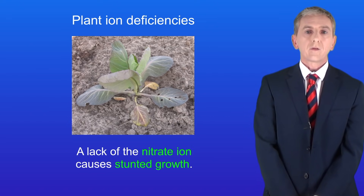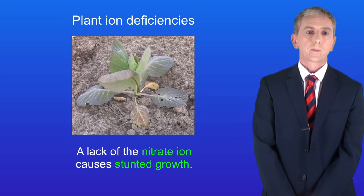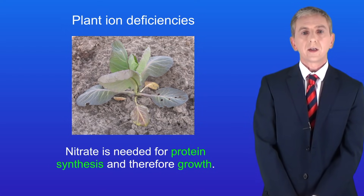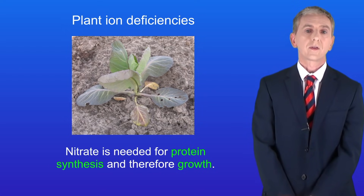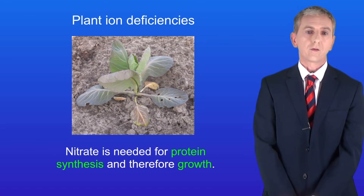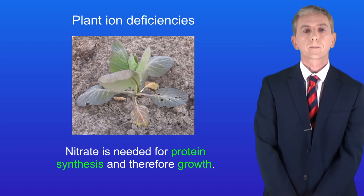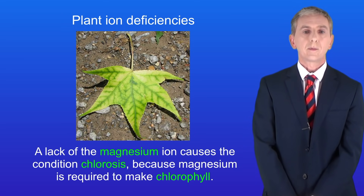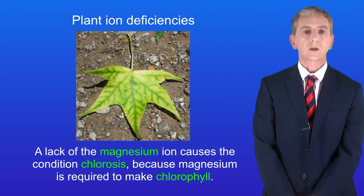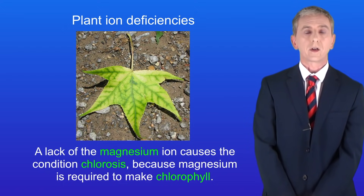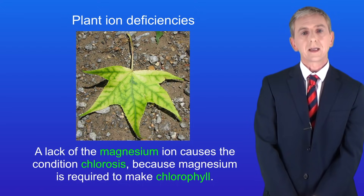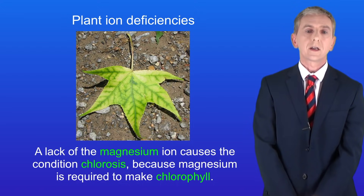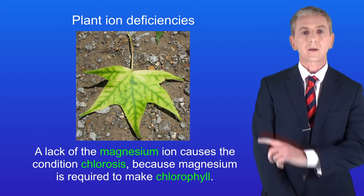A lack of the nitrate ion causes stunted growth, because nitrate is needed for protein synthesis and therefore growth. A lack of the magnesium ion causes a condition called chlorosis, because magnesium is required to make chlorophyll. In chlorosis the leaves lose their green coloration.